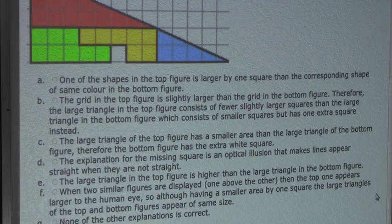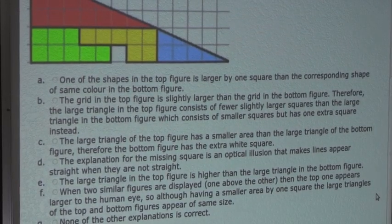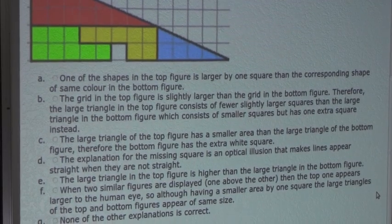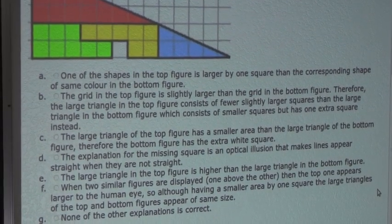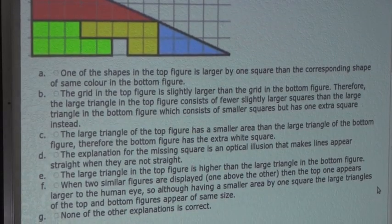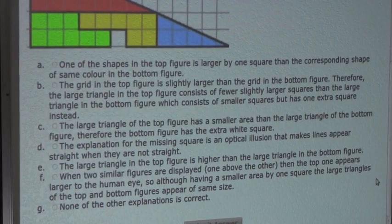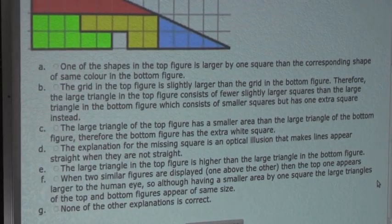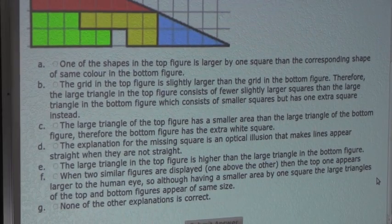Option F: when two similar figures are displayed one above the other, the top one appears larger to the human eye, so although having a smaller area by one square, the large triangles appear the same size. Well, this is nonsense because we know the height for both is five squares and the base for both is 13 squares, so option F is also eliminated.